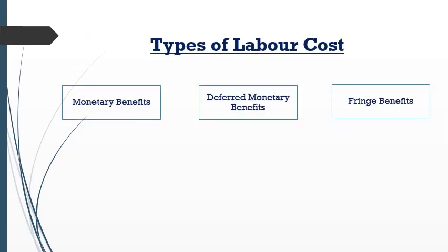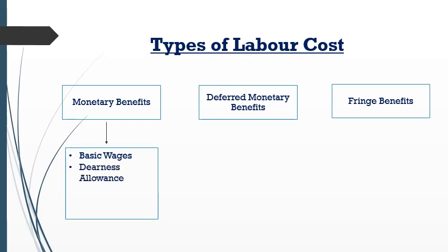What are the different types of labor cost? They are monetary benefits, deferred monetary benefits, and fringe benefits. Monetary benefits include basic wages, dearness allowance, and production bonus.